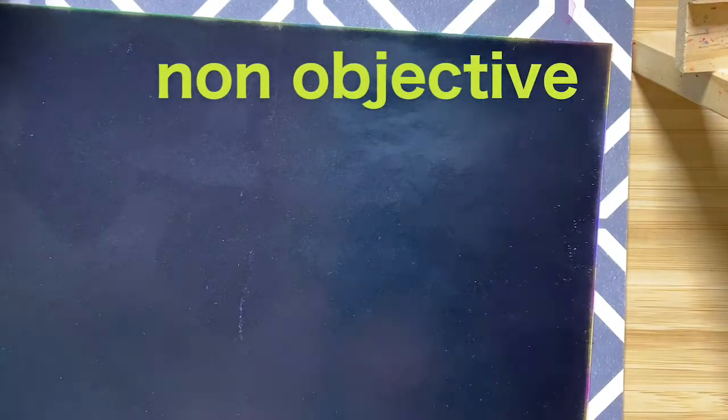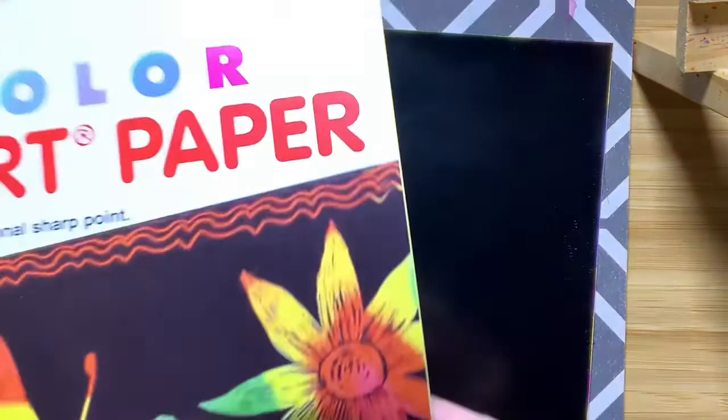Today we're going to do a design that's non-objective. That means it's going to be about colors which are going to show through on the paper, and lines and shapes that we're going to create.